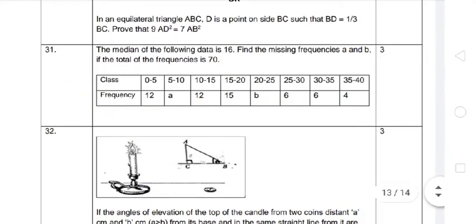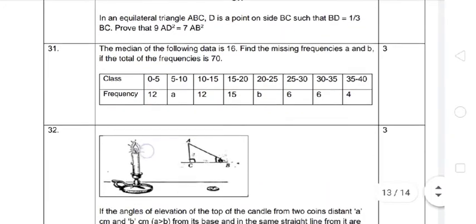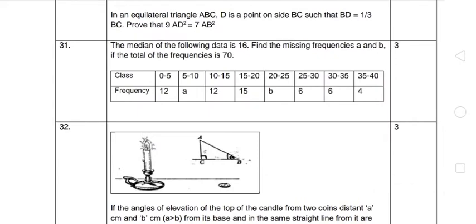Hello students, welcome back to my YouTube channel Supreme Learning Academy. Question number 31: The median of the following data is 16. Find the missing frequencies A and B if the total frequency is 70.